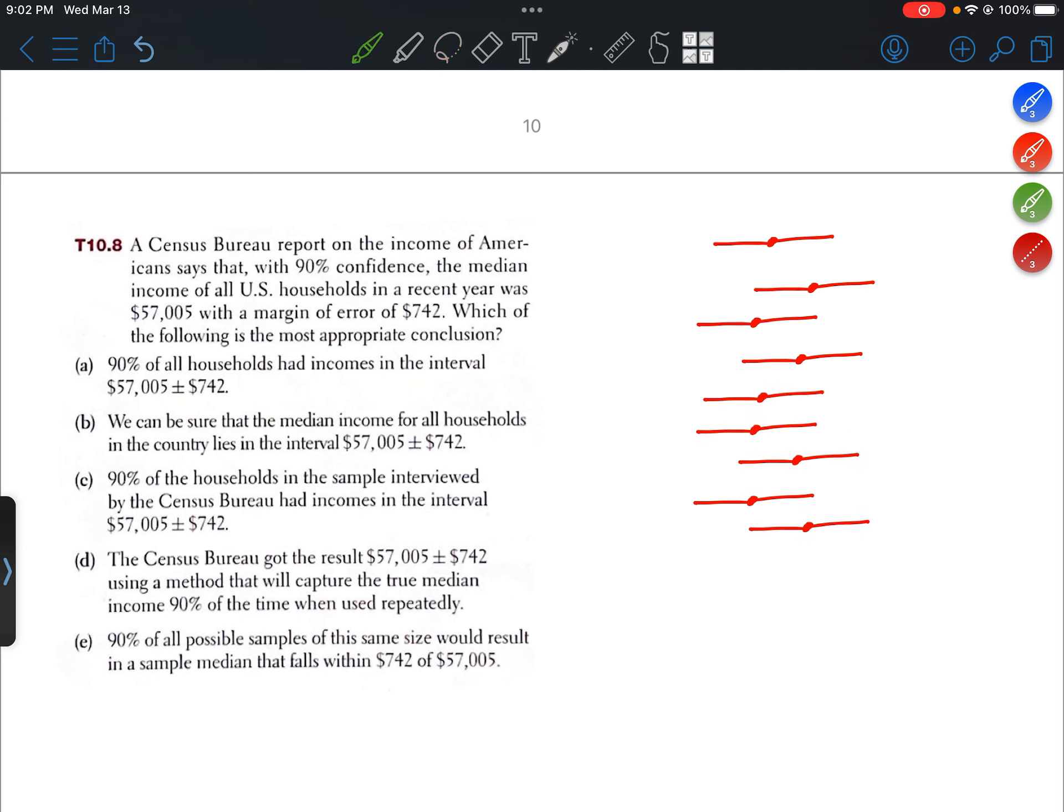And the idea is that in the long run, about 90% of these intervals should capture the true value, which is represented by this green line. So the thing that we're trying to estimate in this question is the median income of all U.S. households. That's the true value we're trying to estimate.